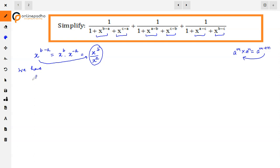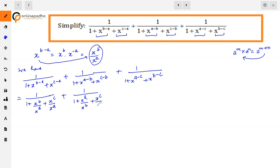So we have 1 upon x is to power b minus a, x is to power c minus a. 1 plus x is to power a minus b, x is to power c minus b. So 1 upon 1 plus x is to power b minus c. So change the form. So 1 plus this can be written as x is to power b upon x is to power a. x is to power c, directly we have x is to power a plus 1 upon x is to power b. x is to power c upon x is to power b.